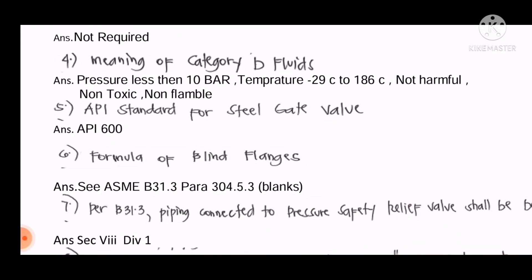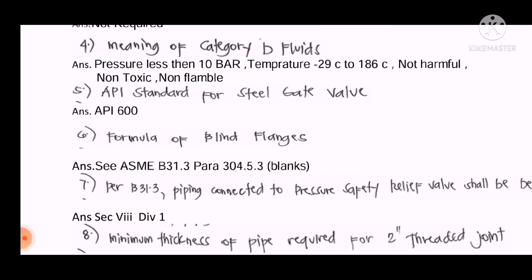Question number six: What is the formula for blind flanges? We will refer to ASME B31.3, paragraph 304.5.3. The answer for question number six is to refer directly to ASME B31.3, paragraph 304.5.3.